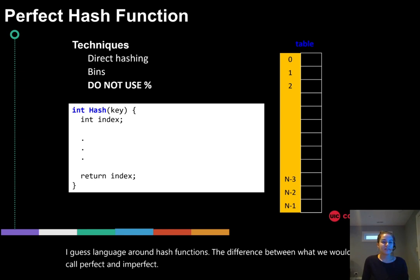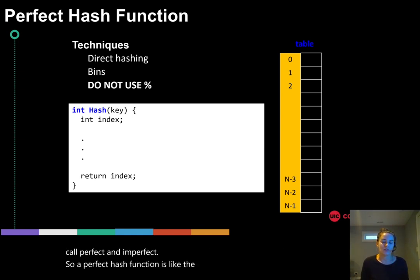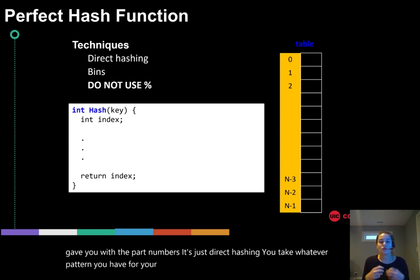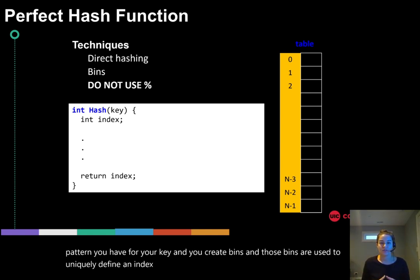So a perfect hash function is like the one that I used in the first example that I gave you with the part numbers. It's just direct hashing. You take whatever pattern you have for your key and you create bins and those bins are used to uniquely define an index based off of every combination of every part number.